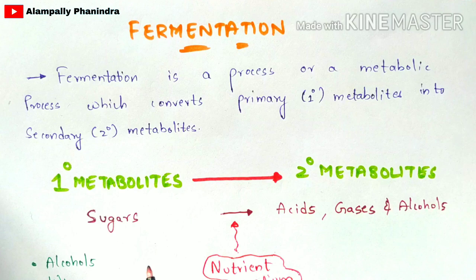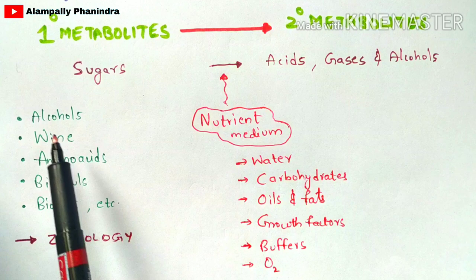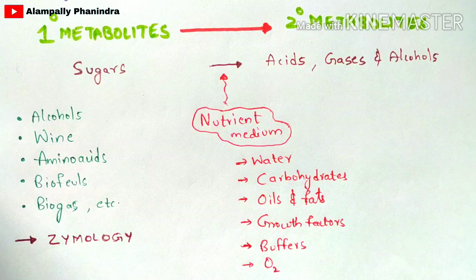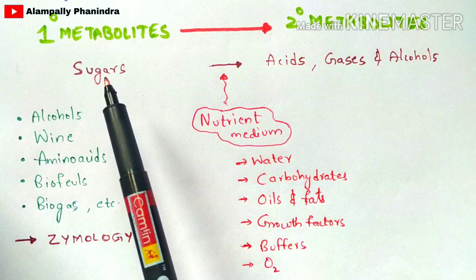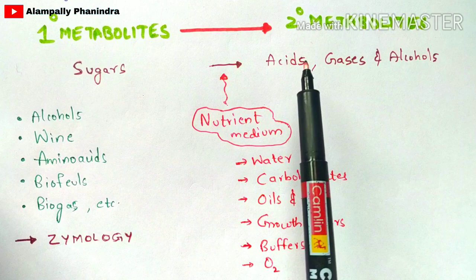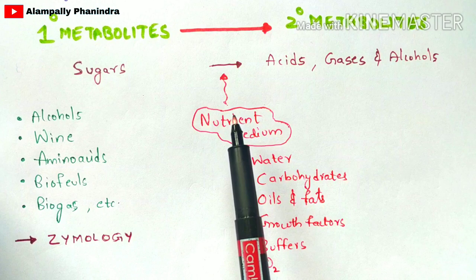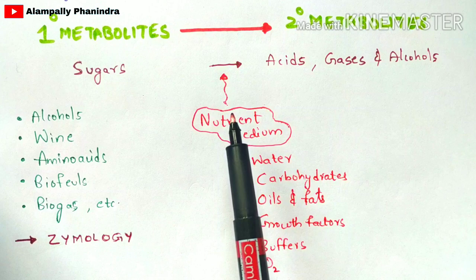This fermentation process is mainly used for the production of alcohols, wine, amino acids, biofuels, biogas, etc. Sugars get converted into acids, gases, and alcohols — that is, primary metabolites get converted into secondary metabolites. For this conversion, the nutrient medium is highly required.